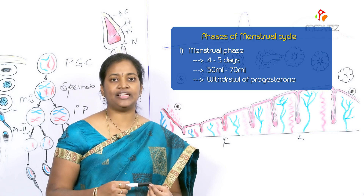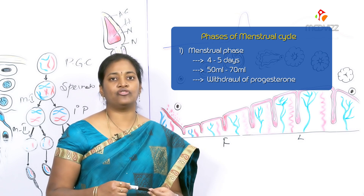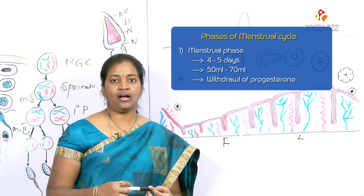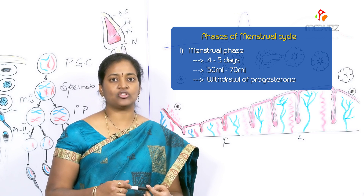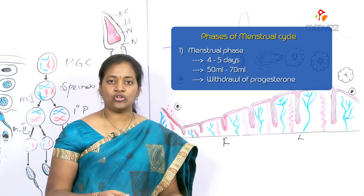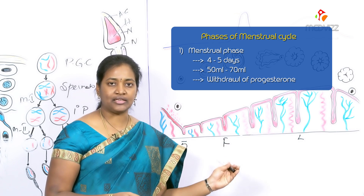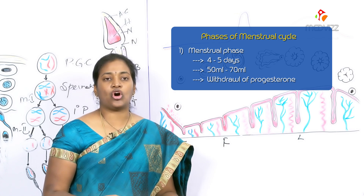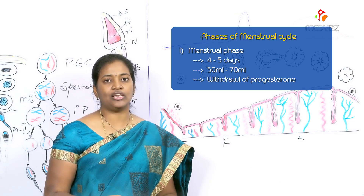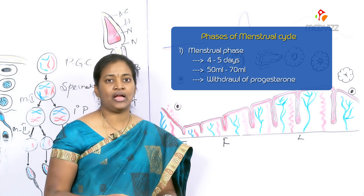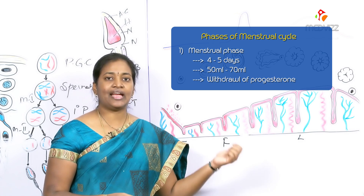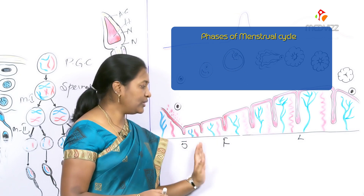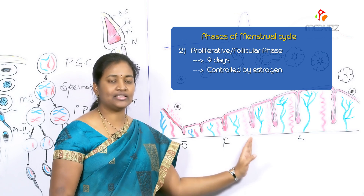The menses is the monthly bleeding, which usually lasts for 4 to 5 days in total. The blood discharged from the vagina is combined with small pieces of endometrial tissue. The average amount of blood loss during this period is normally 50 to 70 ml, and this is caused by the sudden withdrawal of the progesterone hormone. After menstruation, the eroded endometrium becomes thinner.